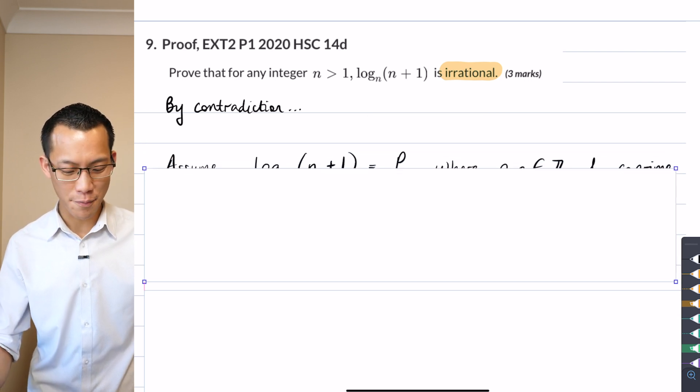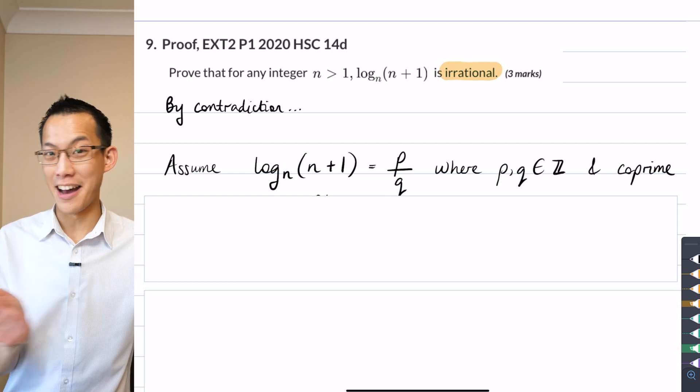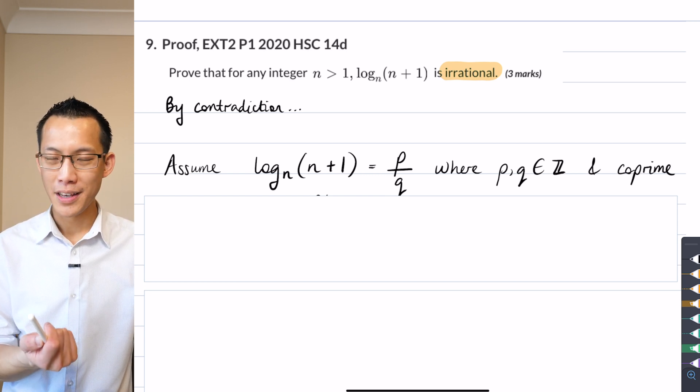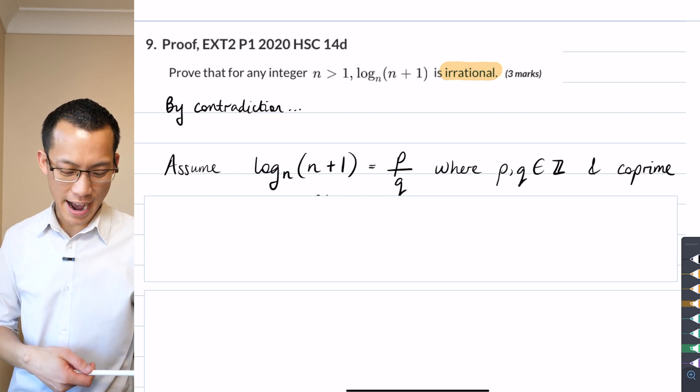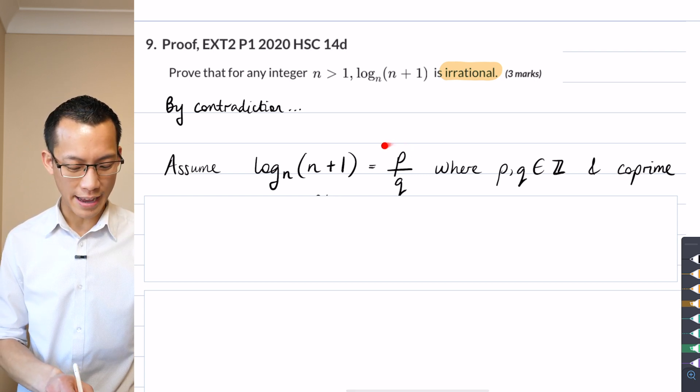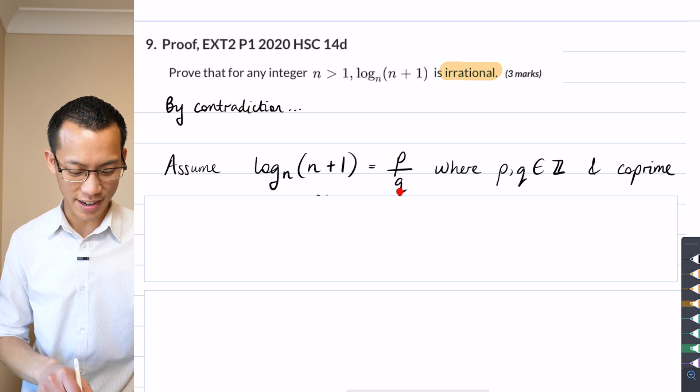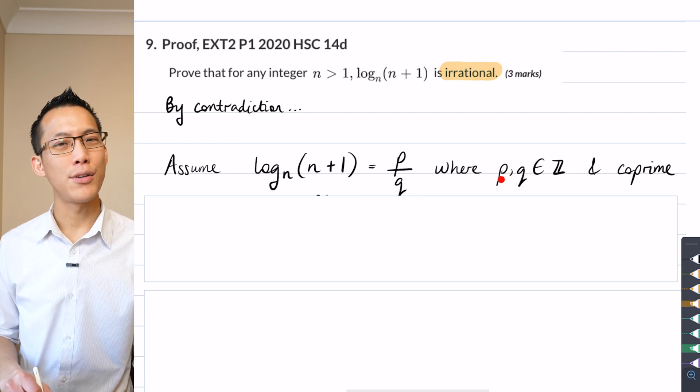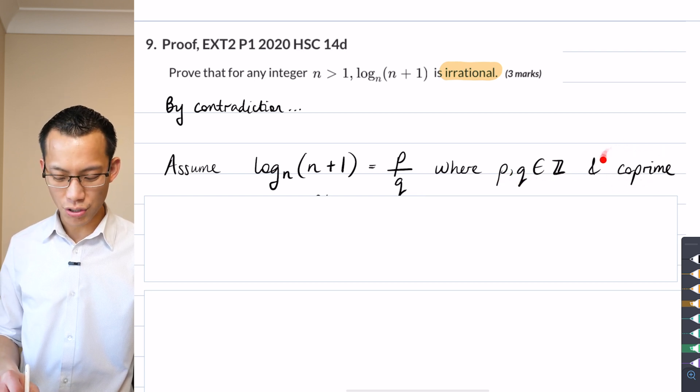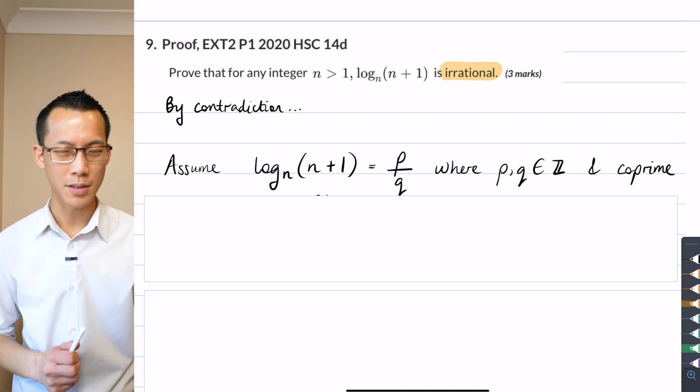So we're going to try and prove that log base 2 of 3 or log base 100 of 101, they were all irrational on how we can do it. And the answer is we're going to try and say that it is rational and then arrive at a contradiction because that's much easier to actually say that something is true rather than something is, like the word irrational has a negation within it already, right? And negations can be quite tricky to work with. So here's how we start. A proof by contradiction has to assume that the statement that we're asked to prove is false.